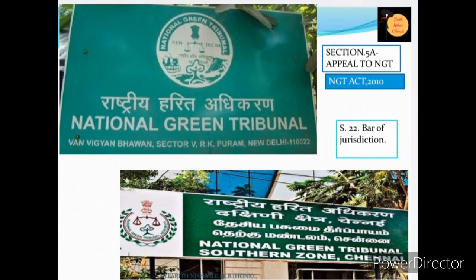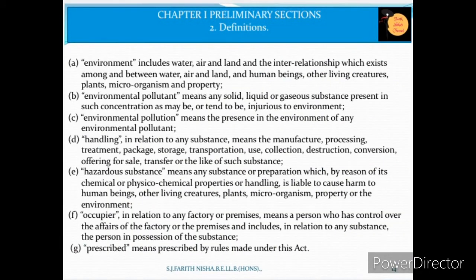The definition of environment under Section 2A includes water, air, land, and the interrelationship which exists among and between water, air, land, and human beings, other living creatures, plants, microorganisms, and property. Section 2B defines environmental pollutant as solid, liquid, or gaseous substance which is injurious to the environment. Environmental pollution, handling, hazardous substance, occupier, and prescribed are explained in Sections 2A to 2G.